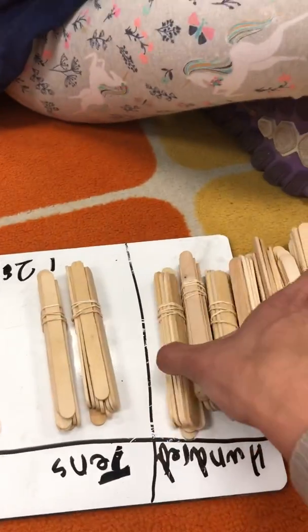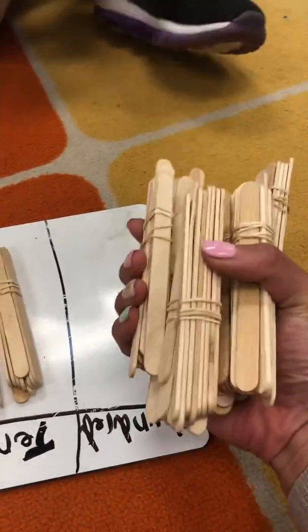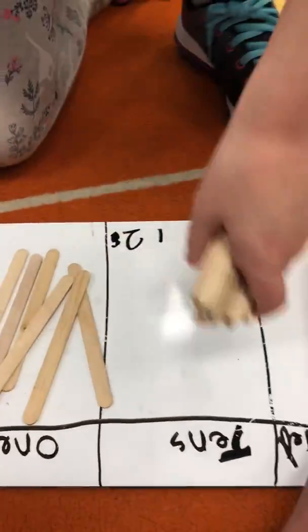So as it gets up into these triple digit numbers, it becomes a little trickier, right? So we just need to make sure that the students are understanding that 10 bundles of 10 equals 100, and from there they can decide their tens and their ones. Awesome job, ladies.